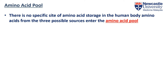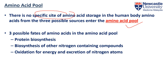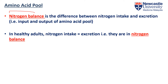But where do we store amino acids? There is no specific storage for amino acids in the human body; collectively, all the amino acids in our body are known as the amino acid pool. The fates of amino acids include protein synthesis, synthesis of nitrogenous compounds, or energy production. Nitrogen balance is an important concept for the amino acid pool — it refers to the difference between nitrogen intake and excretion, or simply input versus output.